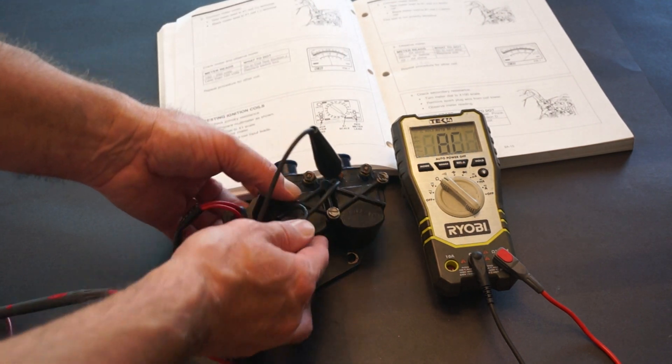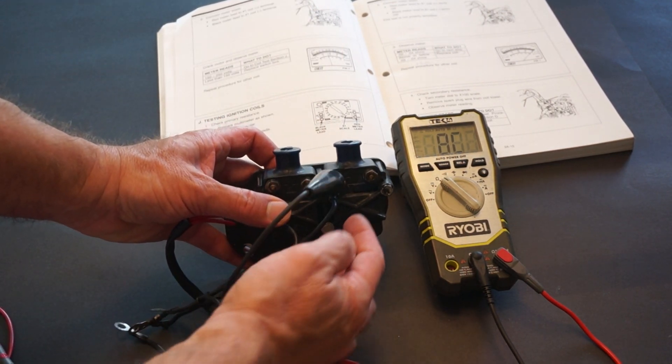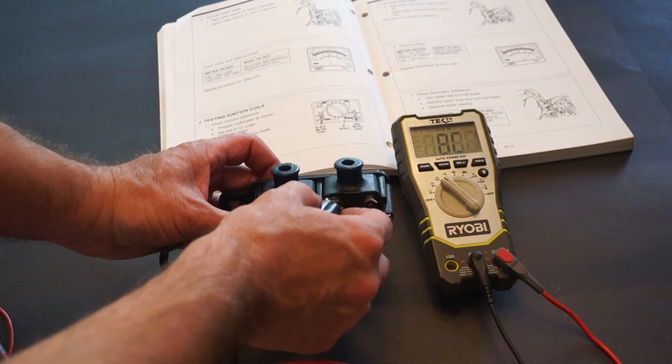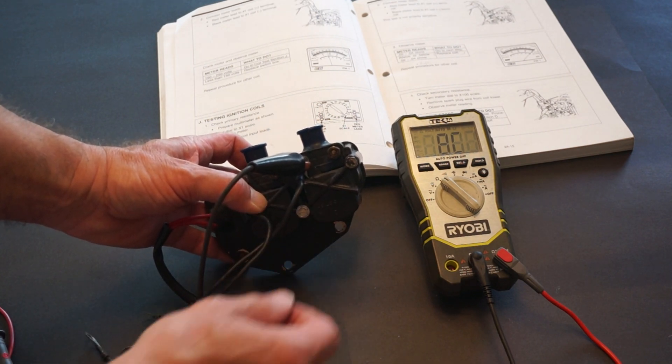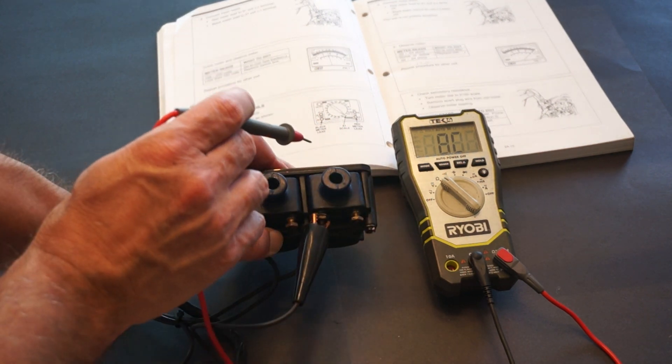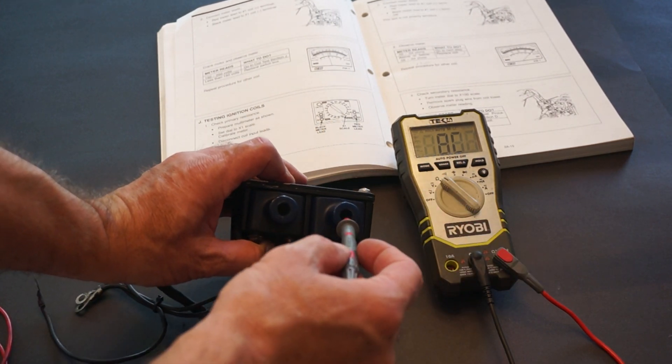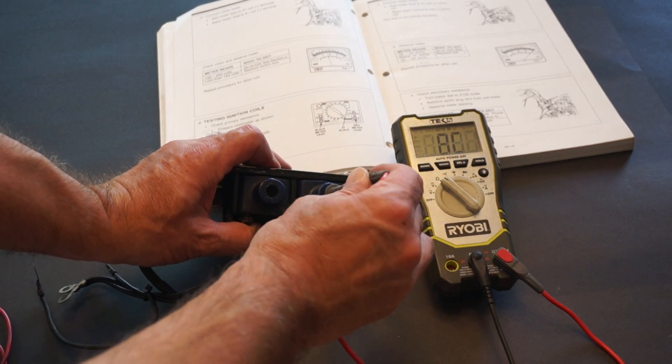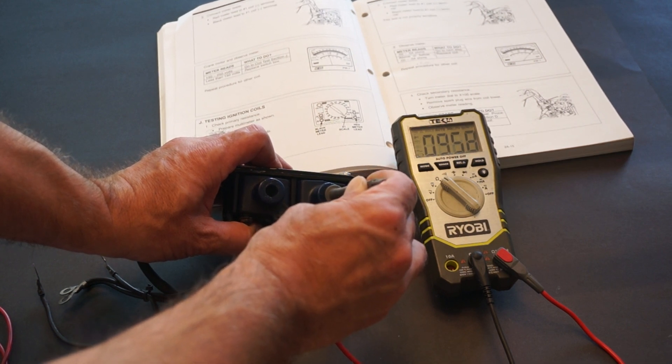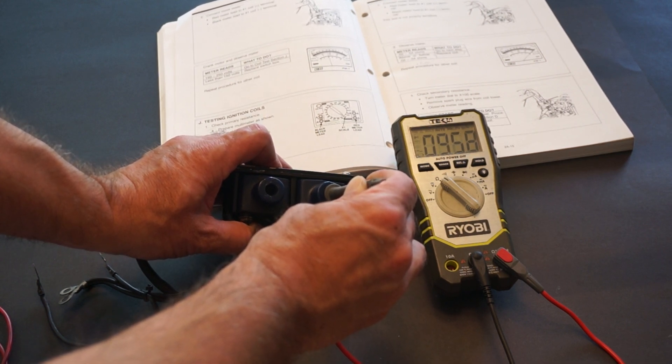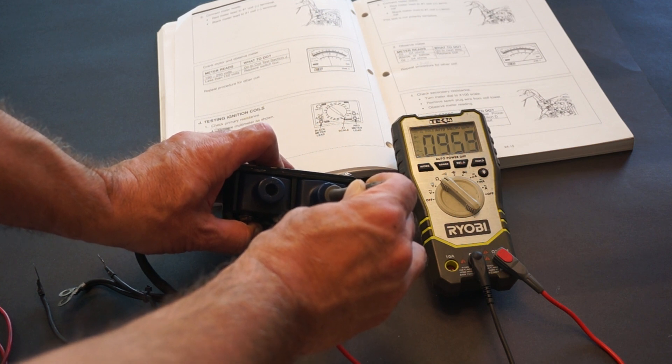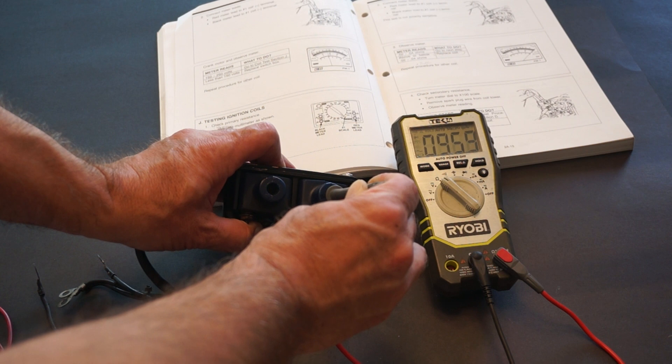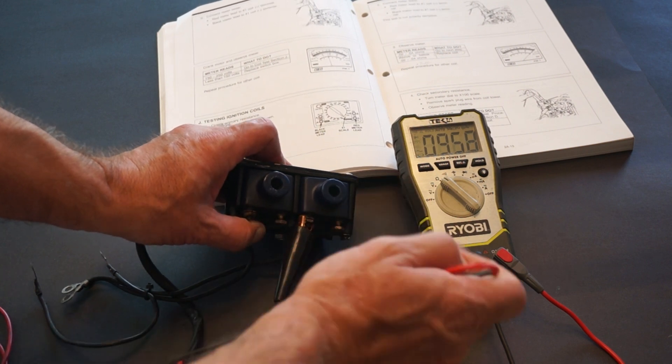Now while you keep the negative lead of the ohmmeter on the black wires, which connect to the block, which is the negative part of this system, put your probe on inside of the coil where the cable goes into. And here we read 0.959 kilo ohms, which is 959 ohms. The book here says 800 to 1100 ohms, so this is a good coil.